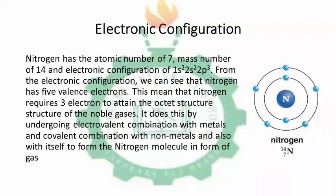Now, to the electronic configuration of nitrogen. Nitrogen has an atomic number of 7 and mass number of 14 and electronic configuration of 1s2, 2s2 and 2p3. From this electronic configuration, you can see that nitrogen has 5 valence electrons. This is the atomic structure of nitrogen.